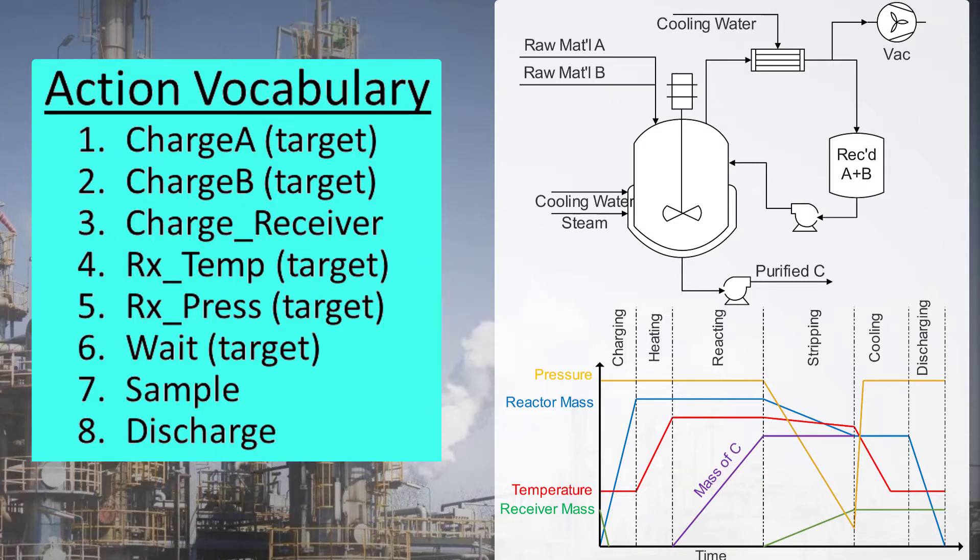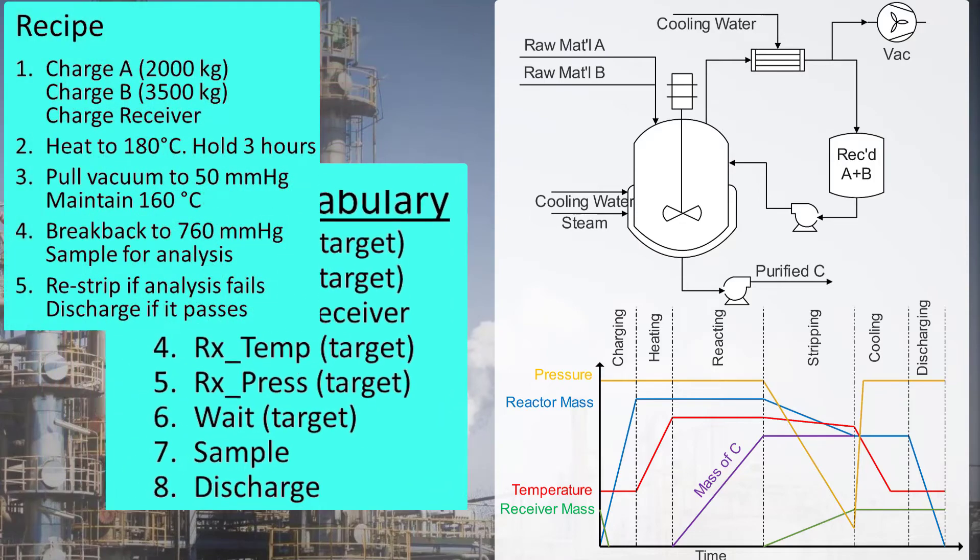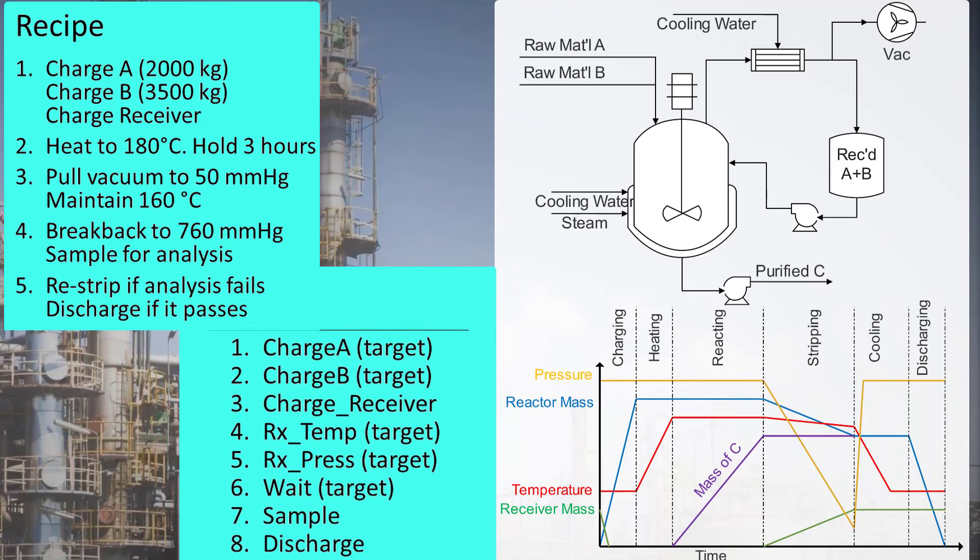Each of this limited vocabulary of actions is actually a sequence of actions that we're going to call a phase. So charge A represents a sequence that charges a target amount of raw material A to the reaction. And Rx press gives a new target pressure to the reactor's pressure sequence, which executes steps to reach that new pressure. We'll learn how to write these phase sequences in a later lecture, but for now, just assume they exist. Pause here and try to write the SFC for this recipe yourself.